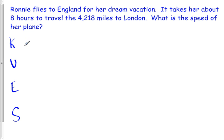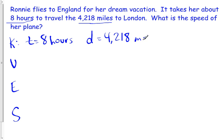Alright? So first, we're going to do our knowns. We know that our time equals eight hours. That's our first thing given. Our other thing given is our distance, which equals 4,218 miles. Okay?